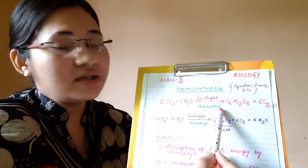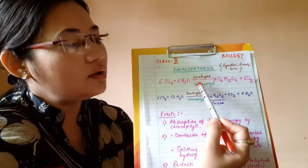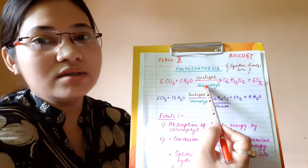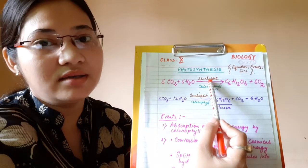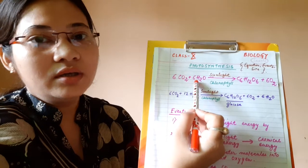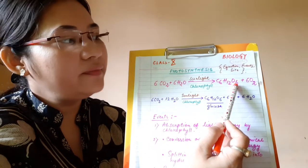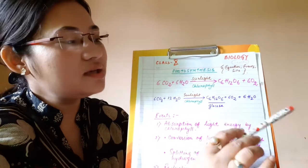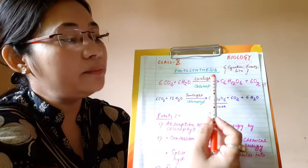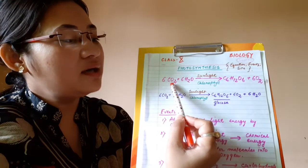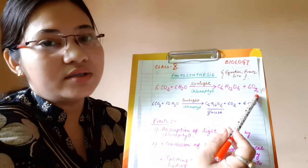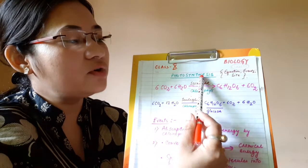Green plants contain chlorophyll molecules which are capable of trapping solar energy. So in the presence of chlorophyll and sunlight, green plants are capable of combining carbon dioxide and water to produce glucose, that is food, and oxygen. Green plants, because they contain chlorophyll, in the presence of sunlight, combine carbon dioxide with water molecules to produce glucose and oxygen.